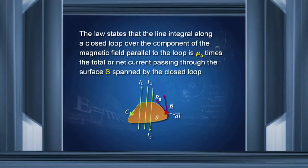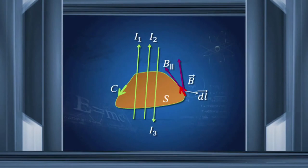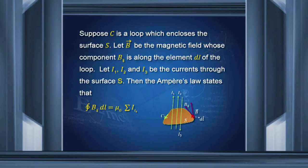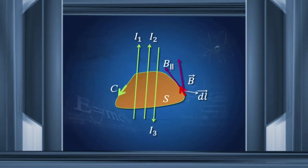Ampere proposed this law, which allows us to calculate the magnetic field due to various currents. The law states that the line integral along a closed loop of the component of magnetic field parallel to the loop is mu_0 times the total or net current passing through the surface S spanned by the closed loop. I have a loop C here which spans a surface, and the currents are going through this surface. Taking the component of magnetic field parallel to the direction of the loop, the integral B_parallel over this loop gives mu_0 times the sum of currents I1 plus I2 plus I3 which pass through the surface spanning loop C.